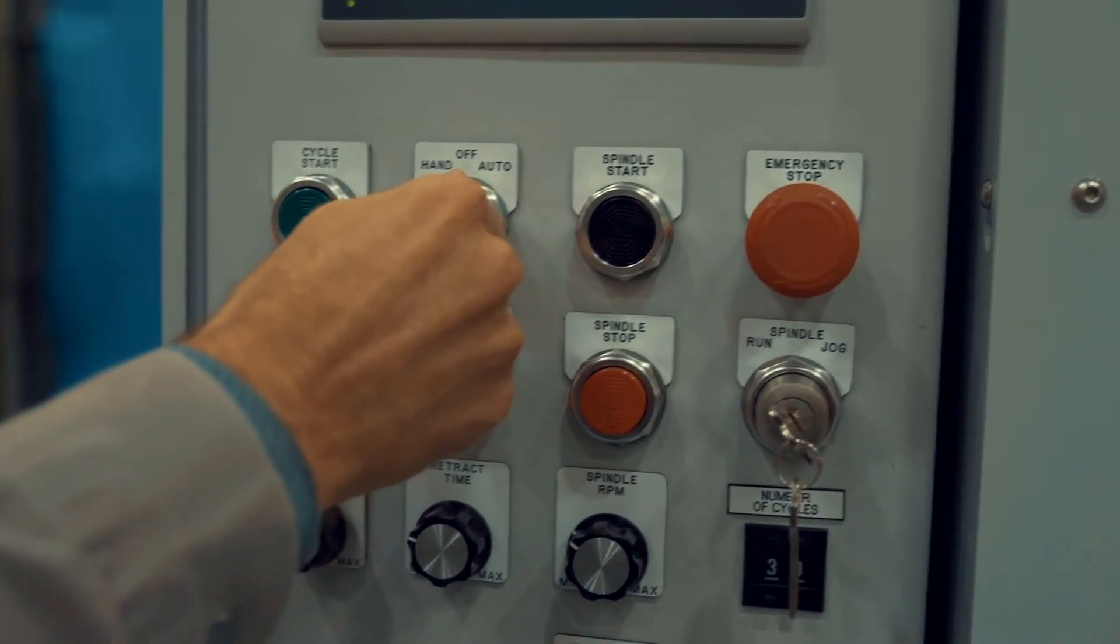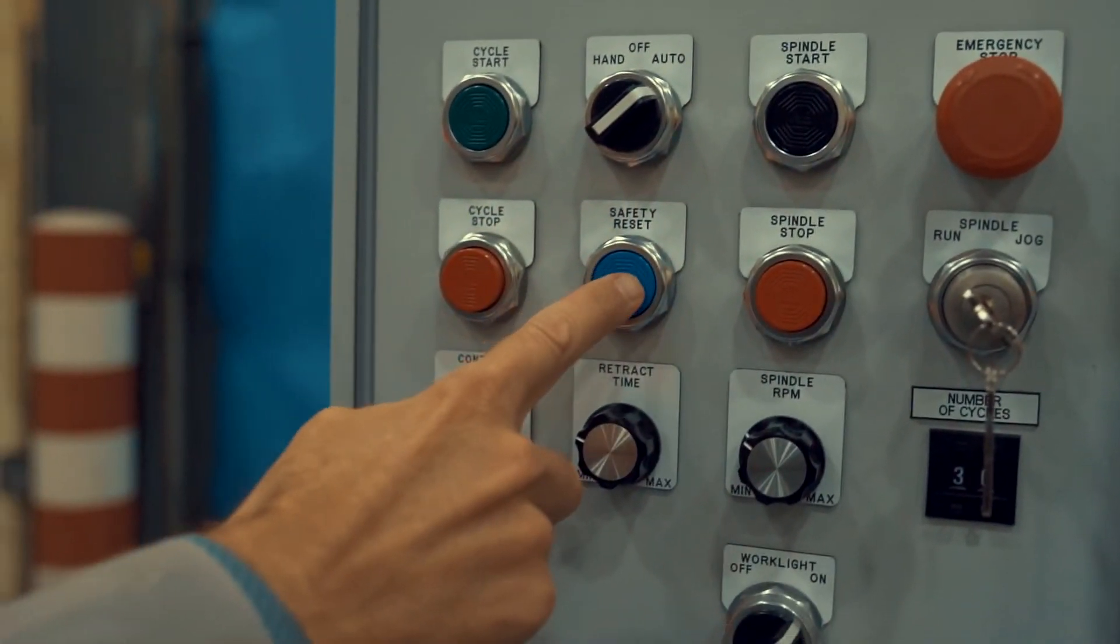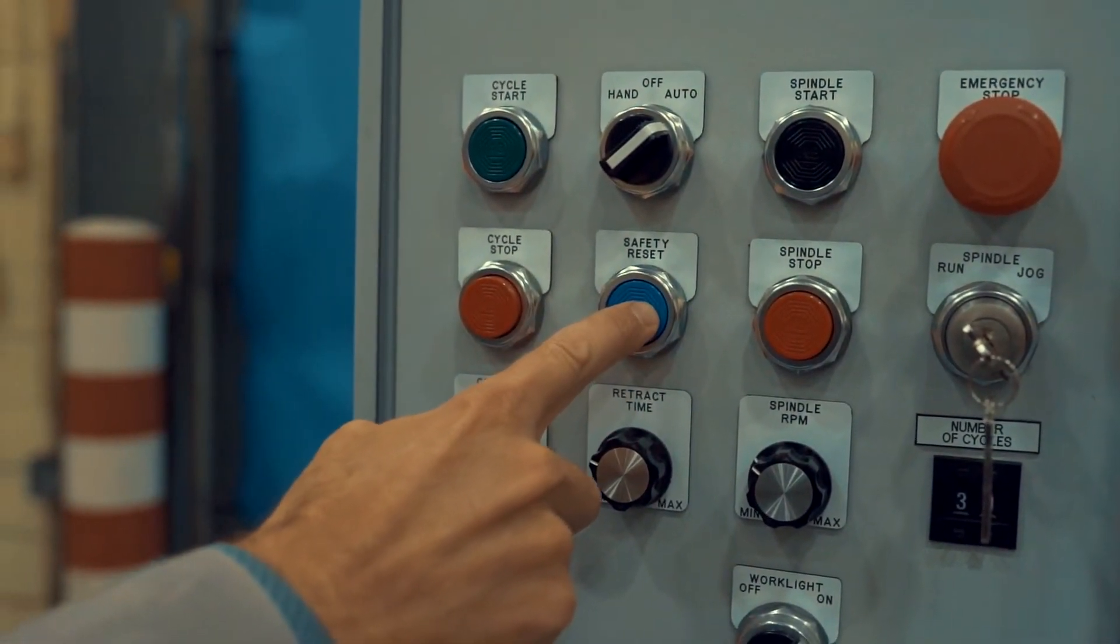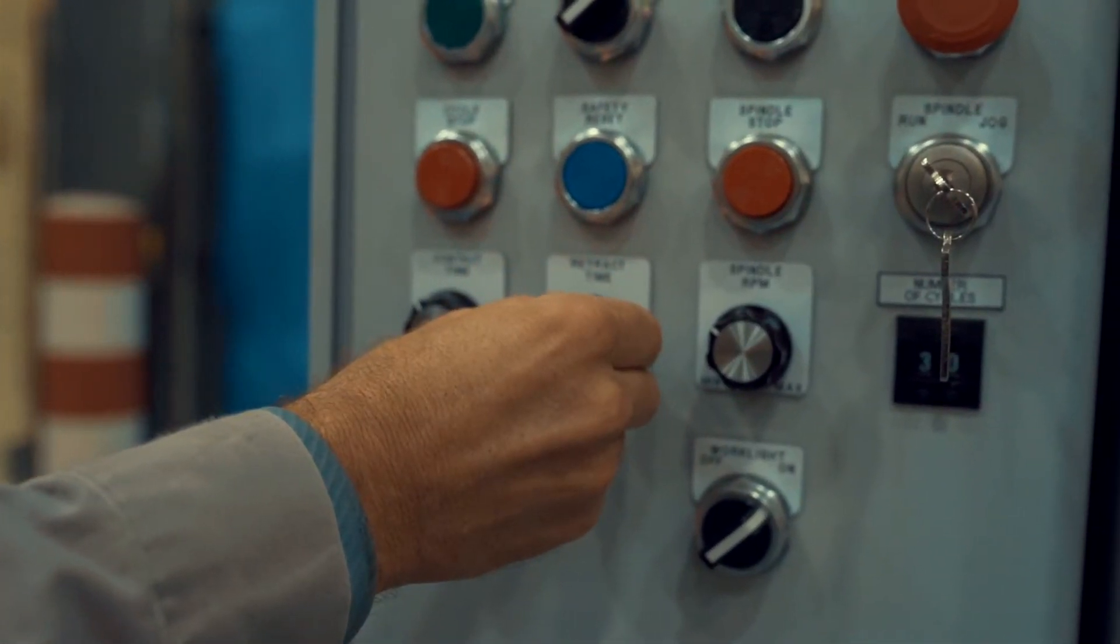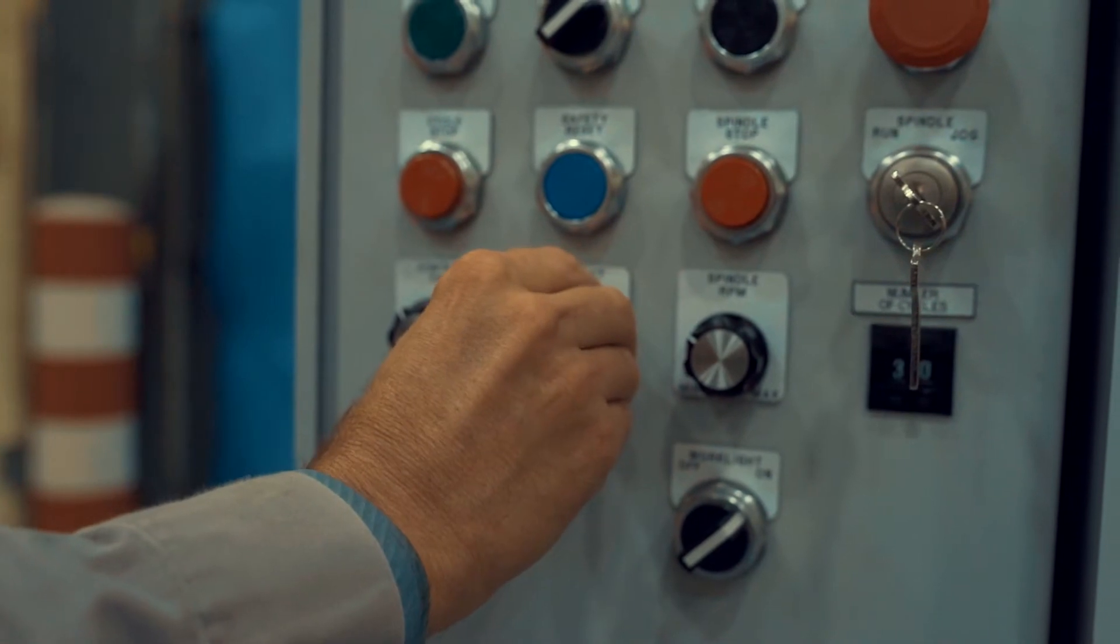Moving over to the auto switch shown in a normal run position auto. Moving down to safety reset to restart the machine after shutdown and retract time setting which again appears on the man machine interface.